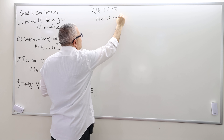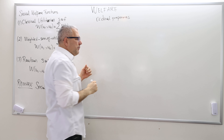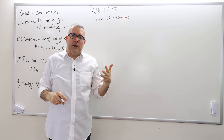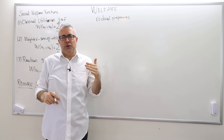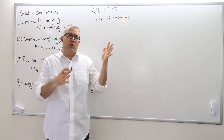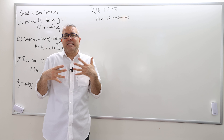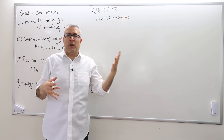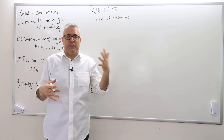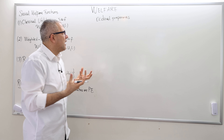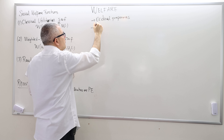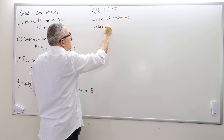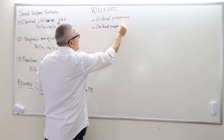Voting rules mostly work with ordinal preferences. Ordinal preferences only tell us about how agents rank different alternatives — one alternative is strictly preferred to another — but it says nothing about how intensively an agent prefers one alternative over another. The intensity of preferences is not included.